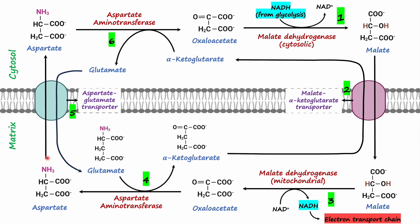Aspartate from the mitochondria is then able to cross the mitochondrial membrane into the cytosol, where it is transaminated back to oxaloacetate by cytosolic aspartate aminotransferase. Alpha-ketoglutarate in the mitochondria is transported into the cytosol in exchange for malate via the malate–alpha-ketoglutarate transporter, and in the cytosol alpha-ketoglutarate is transaminated to form glutamate. Glutamate from the cytosol then enters the mitochondria in exchange for aspartate through the aspartate-glutamate transporter.